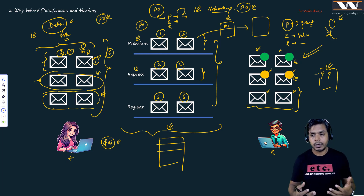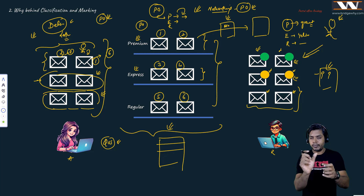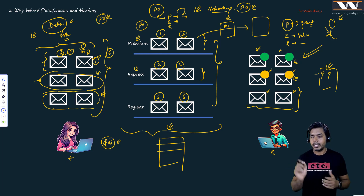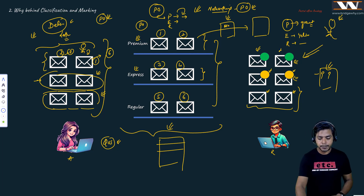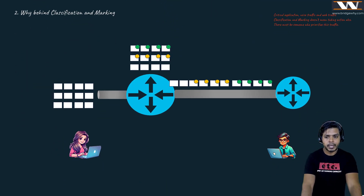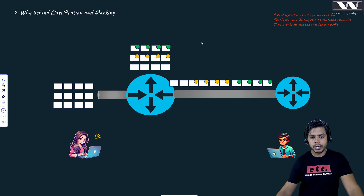So in today's class we will be classifying and marking our messages, but marking alone doesn't guarantee the treatment — I need to tell every router in the path that if you get a message with this marking, here's what you need to do. Now Anjali and Rahul say they get the concept, and let's understand the same analogy with respect to a router. The router has two interfaces: GigabitEthernet 0/0 and 0/1.